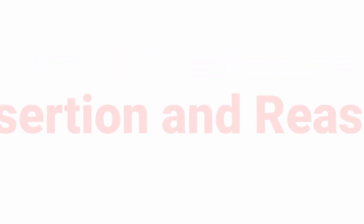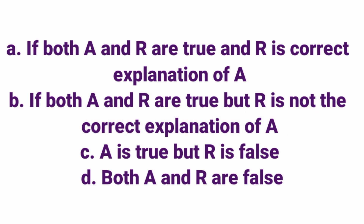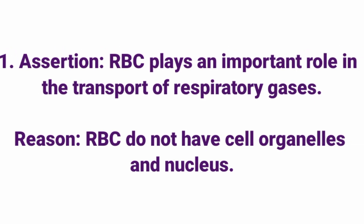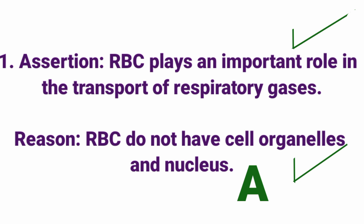Assertion and Reasoning. Options: A — Both A and R are true and R is the correct explanation of A; B — Both A and R are true but R is not the correct explanation of A; C — A is true but R is false; D — Both A and R are false. Question 1: Assertion — RBC plays an important role in the transport of respiratory gases. Reason — RBC do not have cell organelles and nucleus. Both are true and R explains A. Answer: Option A.